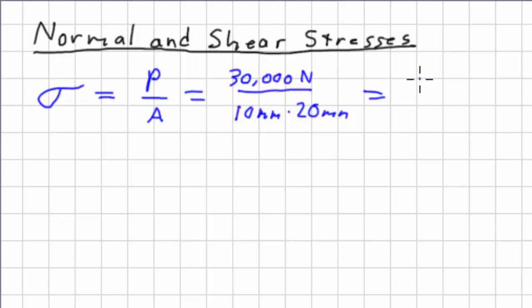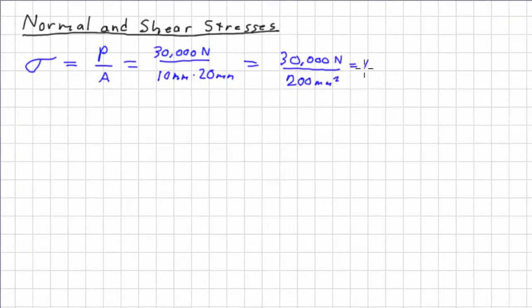So I'll take that 30,000 newtons, or 30 kilonewtons, divide by 200 square millimeters, and I will get 150, my units are newtons over square millimeters. Now if you ask what that is, for those of you who are more familiar with U.S. units, the 30,000 newtons is about 6,750 pounds, and this 200 square millimeters, that's about 0.3 square inches.